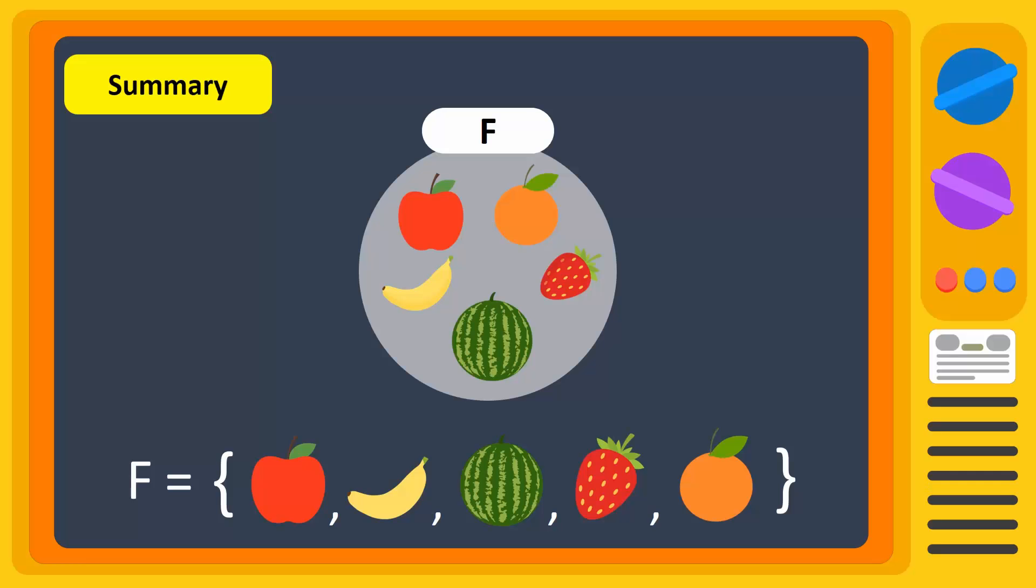We learned that sets can be expressed in several different ways. The tabular or roster form lists all the distinct elements of a set within braces and each element is separated by commas.